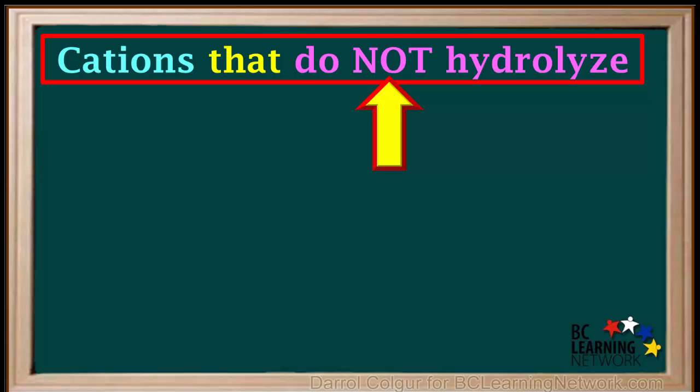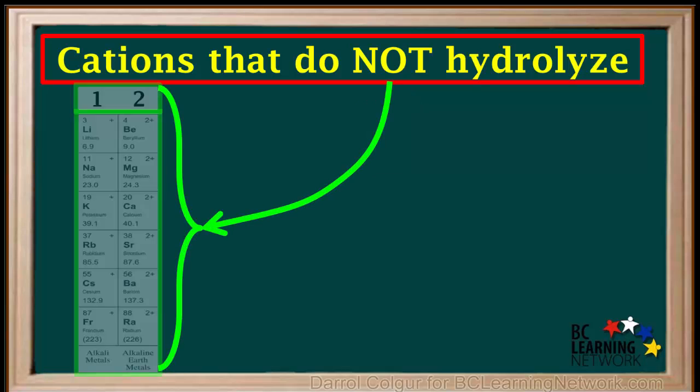When discussing cations, it is best to start by learning which cations do not hydrolyze. Cations that do not hydrolyze are the ions of group 1, excluding hydrogen, and group 2, on the left side of the periodic table.